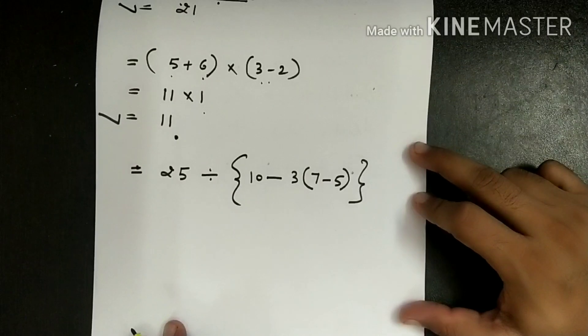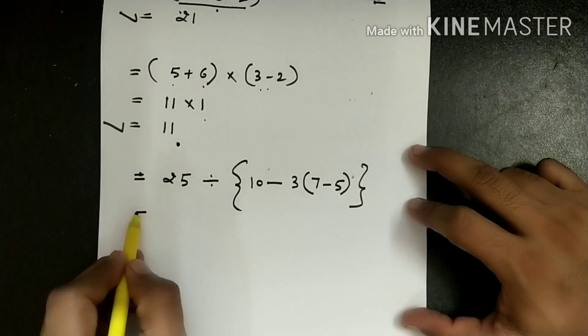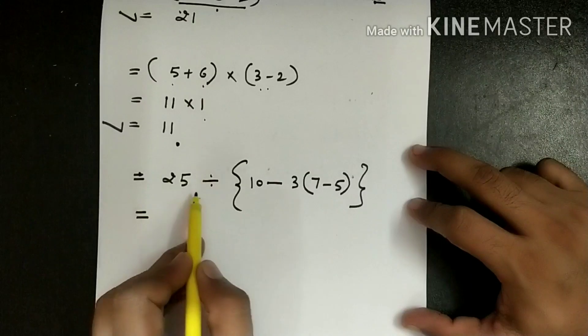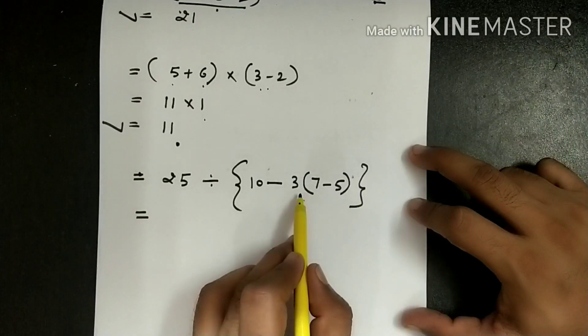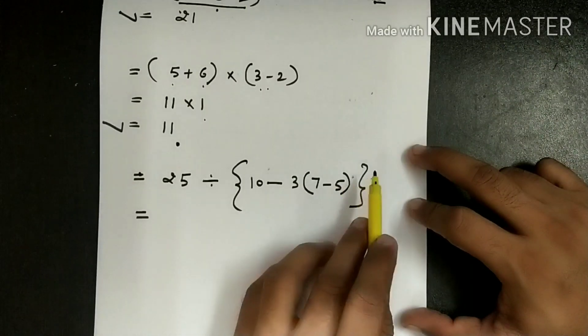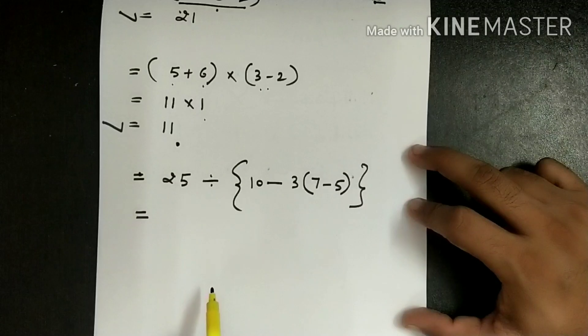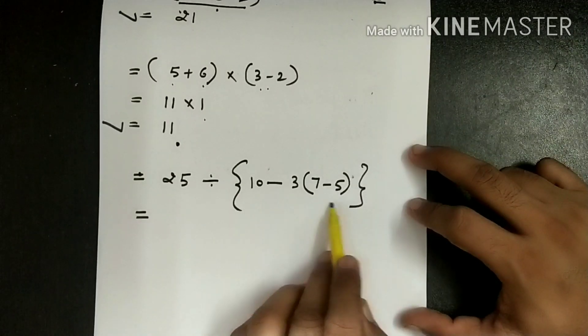Let's take another example and try to understand the rule of BODMAS. In this example we have 25 divided by 10 minus 3 into 7 minus 5 in a whole bracket. So we have two brackets, the bigger bracket and a smaller bracket.